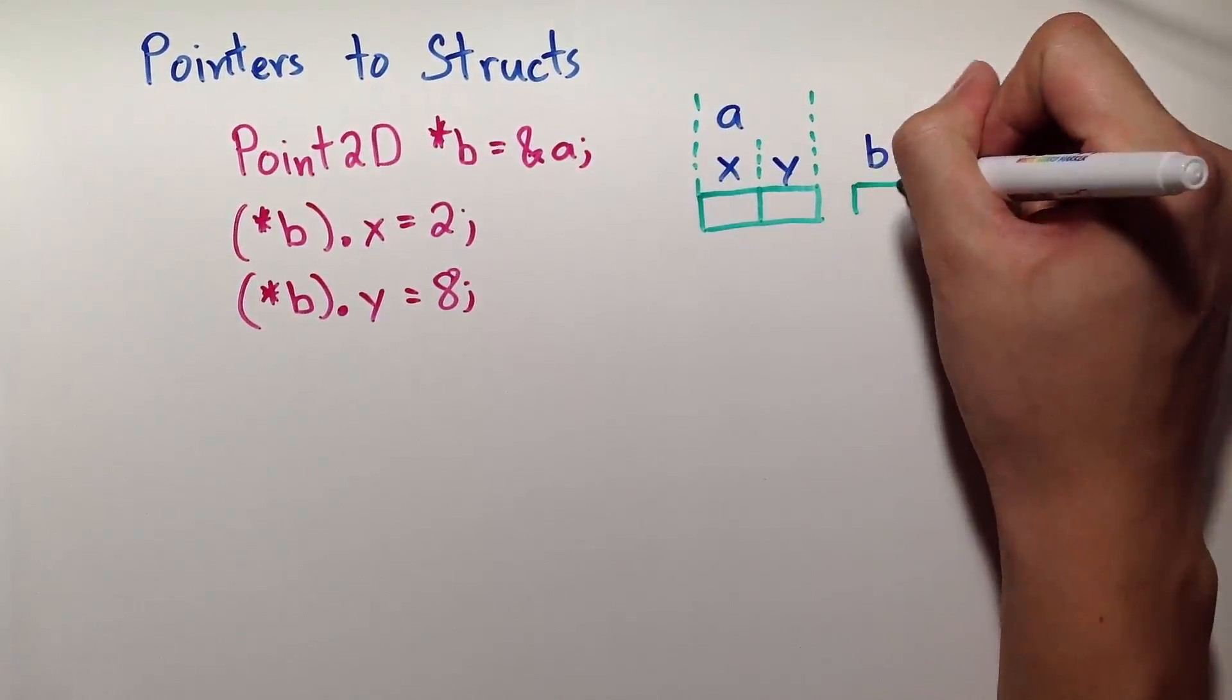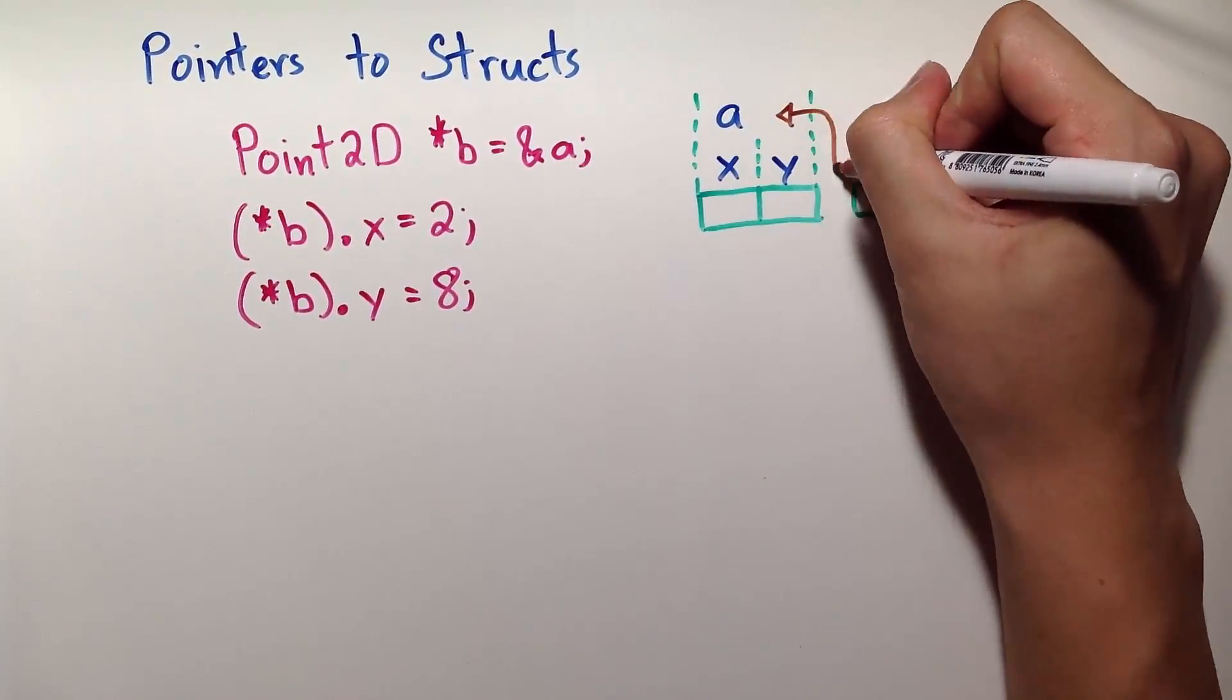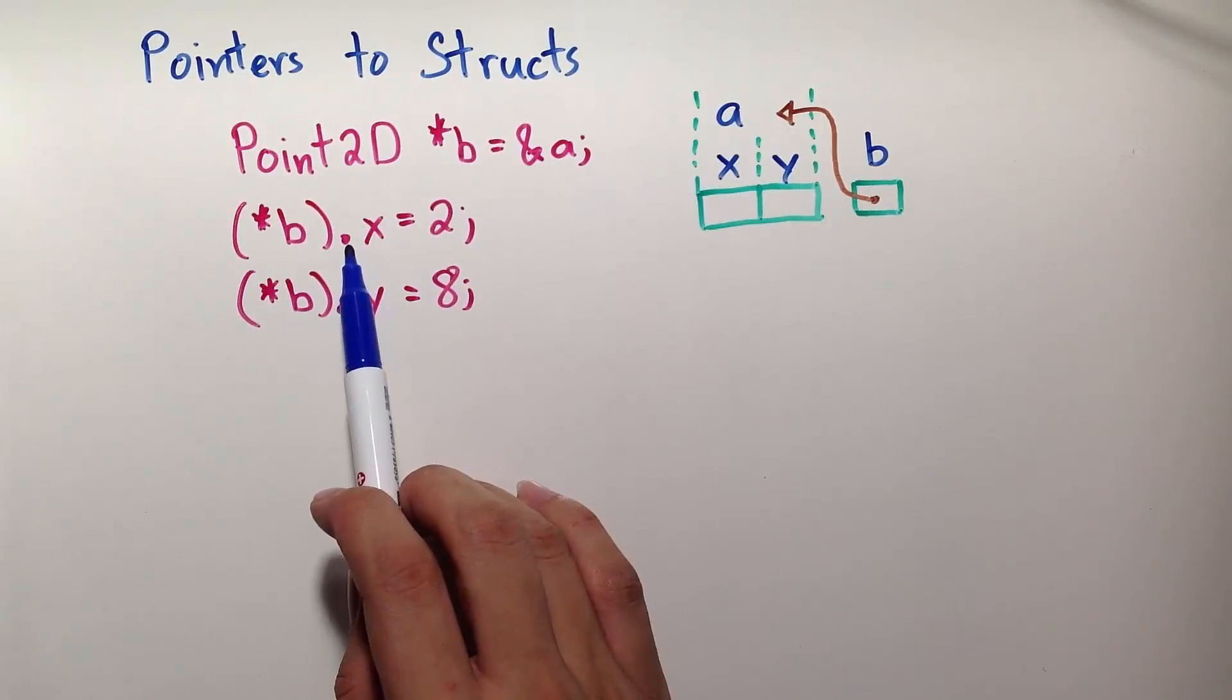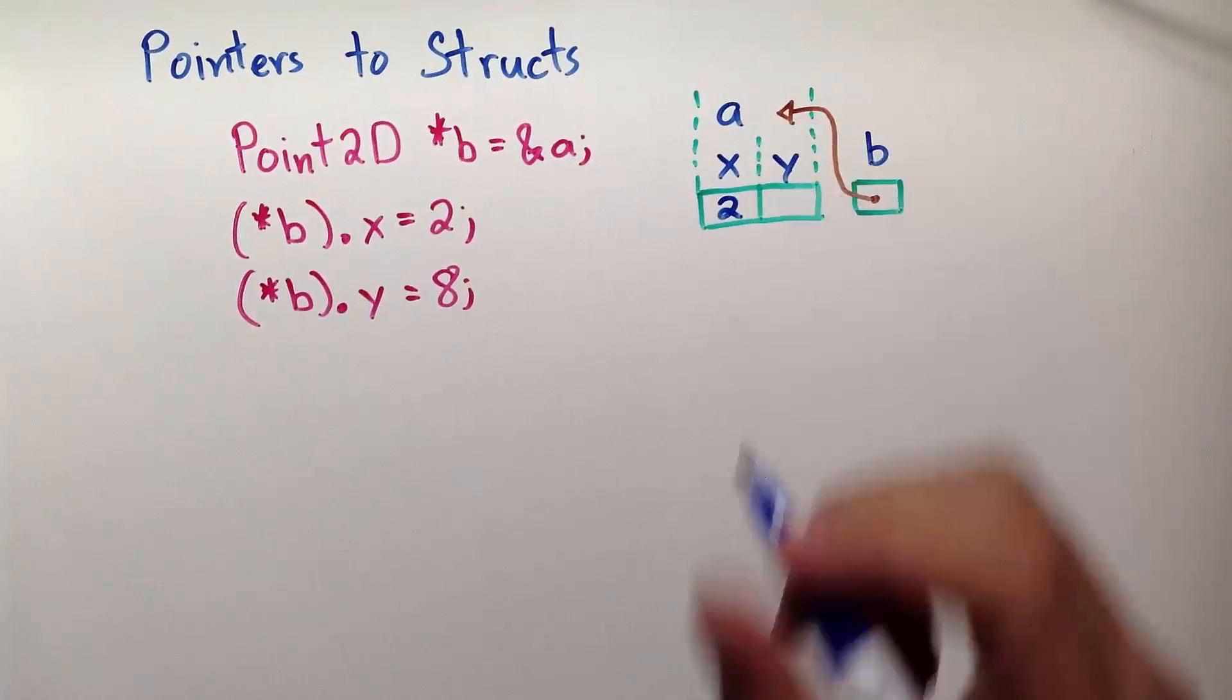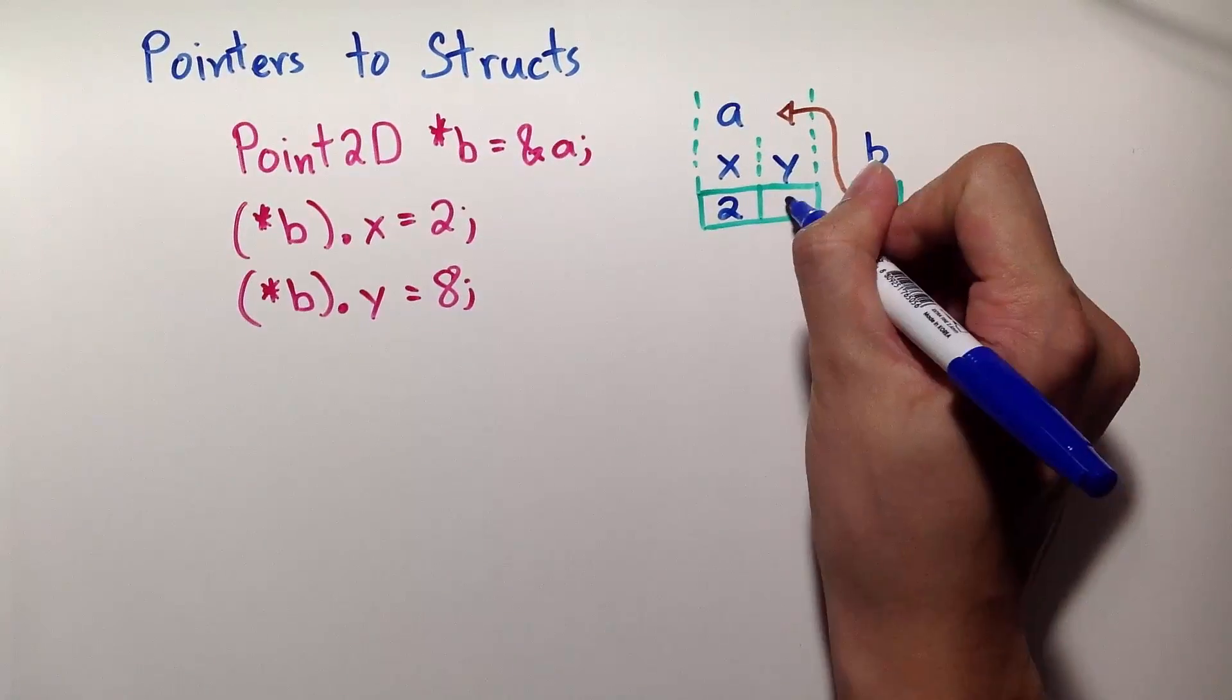And B is a pointer to a struct point2d, and here it gets the address of A. Now we can dereference B followed by accessing the child x and assign it the value of 2. And same thing, dereference B dot y is equal to 8.